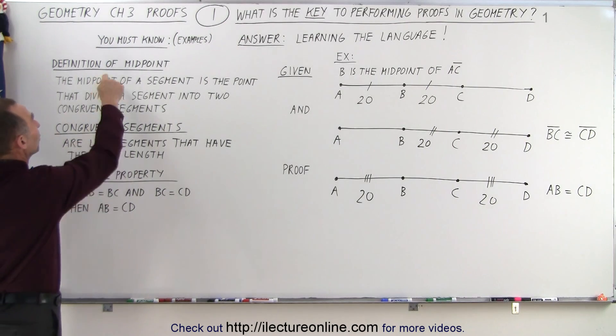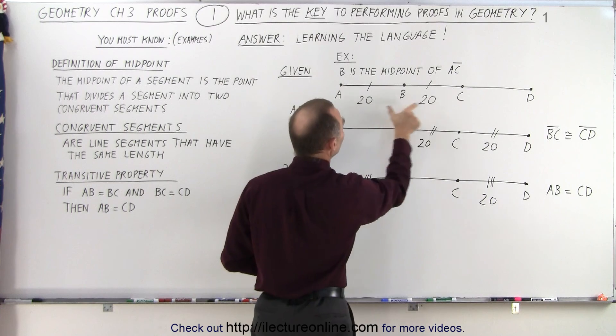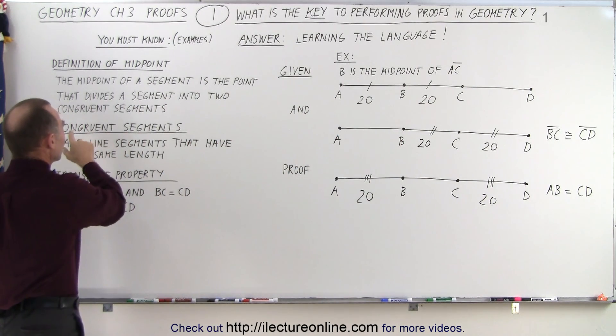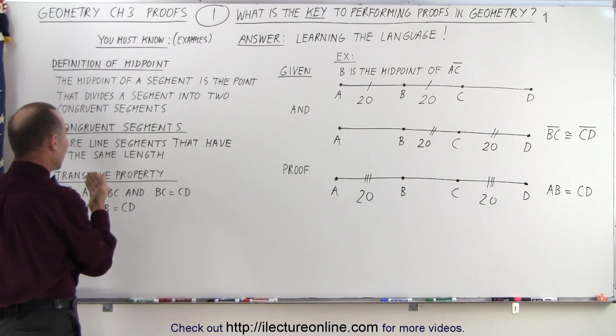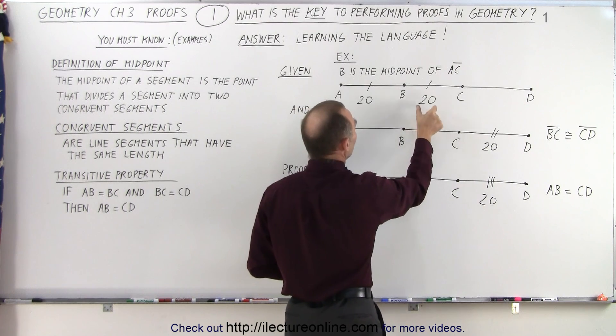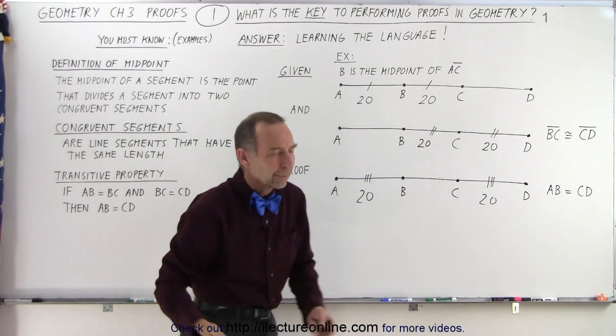You can simply then decide, okay, all I need to know is the definition of the midpoint, because that tells me that if B is in the middle, these two lengths must be the same. If those two lengths are the same, that means if they're congruent, that means they have the same length. And the transitive property says that if A is equal to B and B is equal to C, then A must be equal to C. Kind of the same kind of thing like we use in algebra.